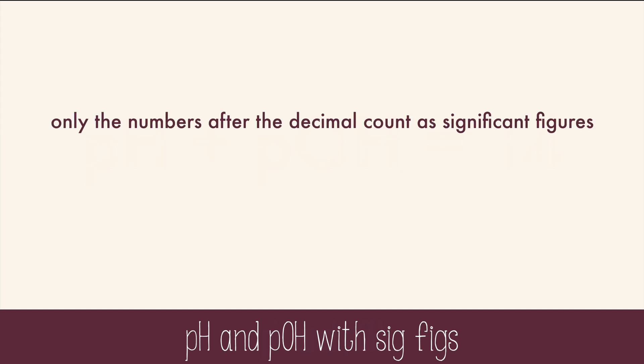Significant figures in pH and pOH scales are a little different than your usual numbers. Because the digits before the decimal denote the exponent, it's only the numbers after the decimal that count as significant figures. For example, a pH of 6.725 has 3 significant figures, and a pH of 10.37 has only 2 significant figures.